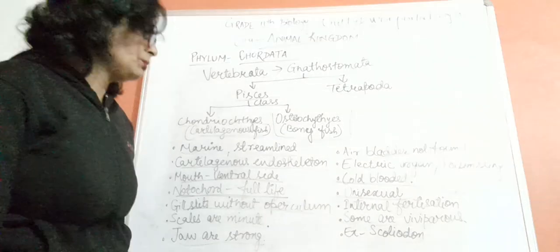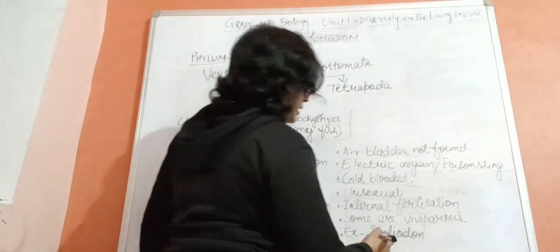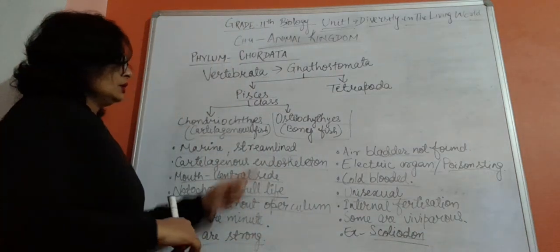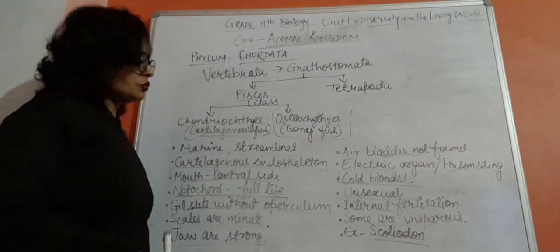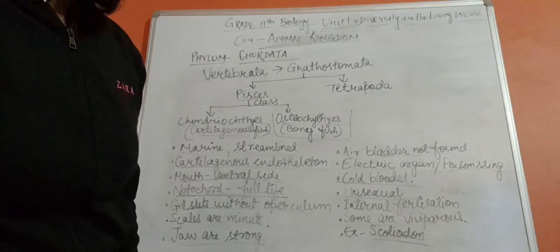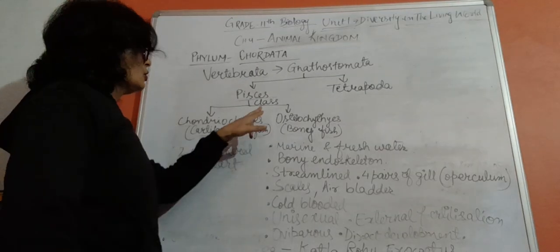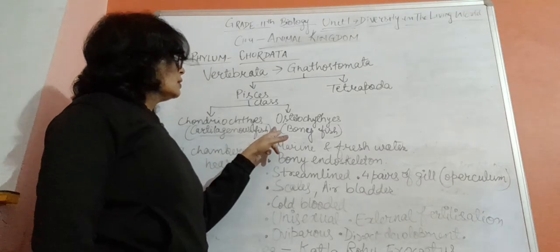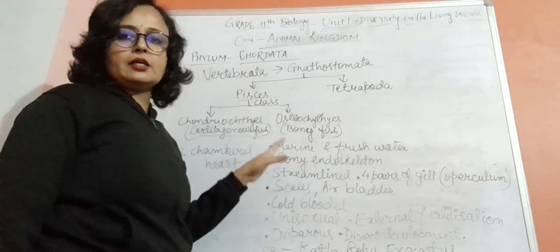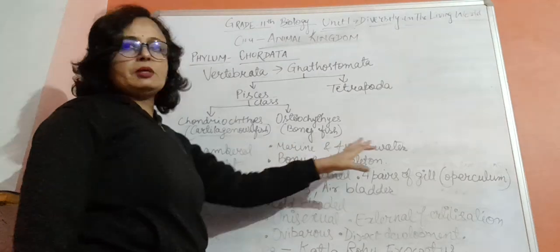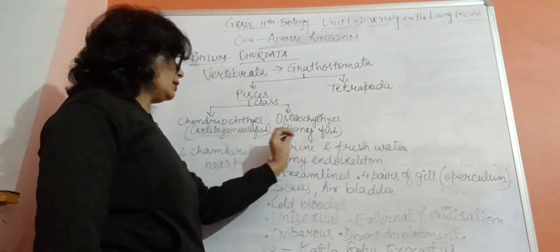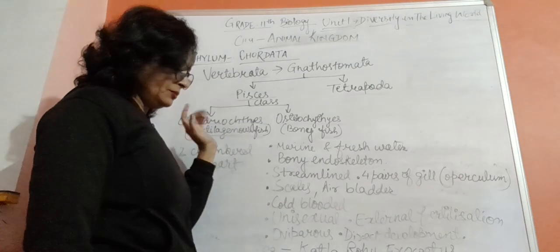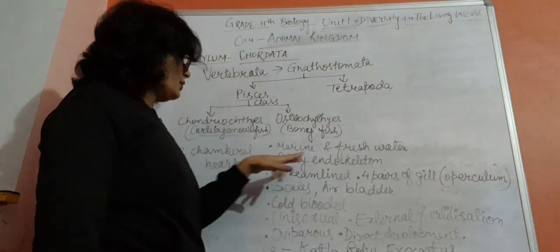The other class of Pisces is Osteichthyes, the bony fishes. These are found in both marine and freshwater habitats. Chondrichthyes were marine only. Osteichthyes have bony endoskeletons. Body shape is streamlined, which helps in swimming.